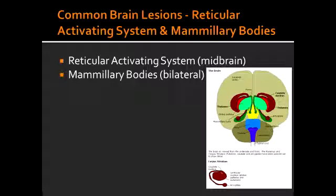What is the consequence of a bilateral mammillary body lesion? If the mammillary bodies are bilaterally lesioned, it would lead to Wernicke-Korsakoff syndrome — a condition in which there is confusion, ophthalmoplegia, ataxia, memory loss (both anterograde and retrograde amnesia), as well as confabulation and personality changes.